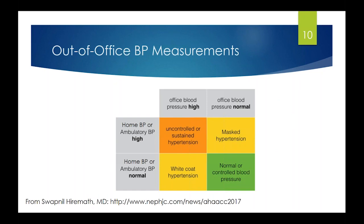Out-of-office blood pressure measurement is key because it allows identification of masked hypertension and white coat hypertension. Borrowing a figure from Swapnil Hiramath, a nephrologist in Canada, the two discordant patterns are where office blood pressure is normal but home blood pressure is elevated — masked hypertension — or high office blood pressure with well-controlled blood pressure outside the office, which is white coat hypertension.